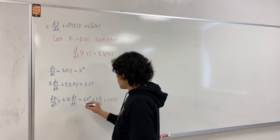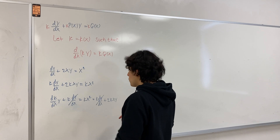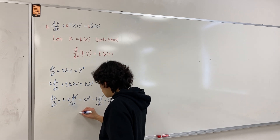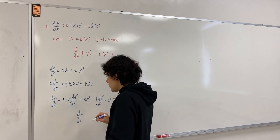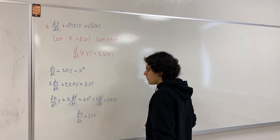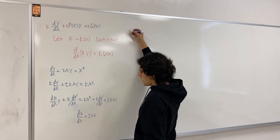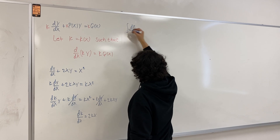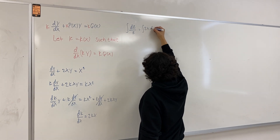Now we can cancel out the k dy/dx terms on both sides. We're left with dk/dx times y equals 2kx times y. We can divide by y on both sides — those cancel out as well. And in the end we get dk/dx equals 2kx. Now we want to solve for k, our integrating factor. Using separation of variables, we have dk divided by k equals 2x dx.